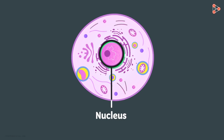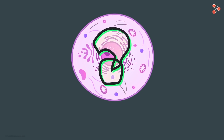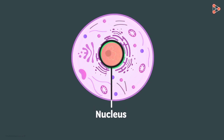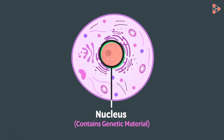But how does it regulate the activities of other organelles? Let's try finding it out in this video. The reason why the nucleus is given the status of the major cell organelle is because it contains the genetic material of the organism.